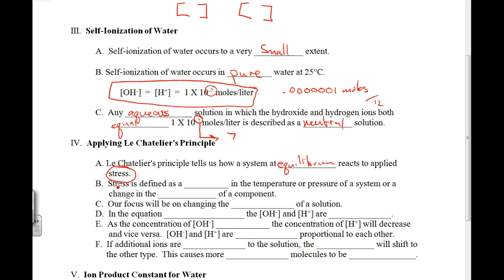A system at equilibrium reacts to applied stress. There's the word. Remember, a system at stress relieves itself. That's Le Chatelier's principle. Stress is defined as a change in temperature or pressure of a system or a change in the concentration of a component.